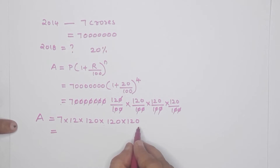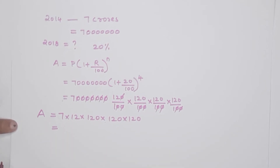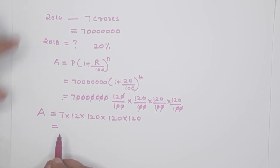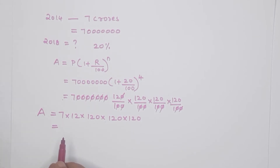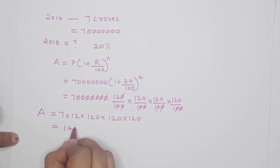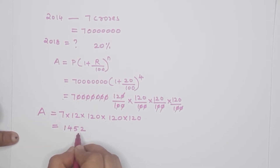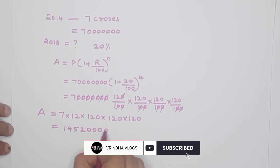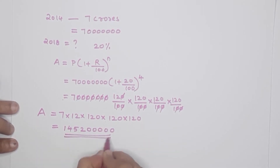If you multiply this in the calculator — 7 crores multiplied by 120 by 100 raised to 4 — you can get the number of mobile phones in 2018. If I multiply this in the calculator, the result gives the number of handsets.